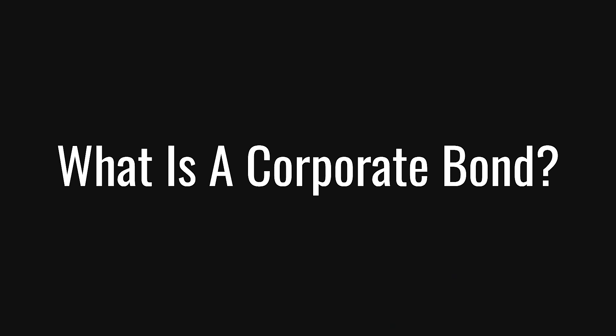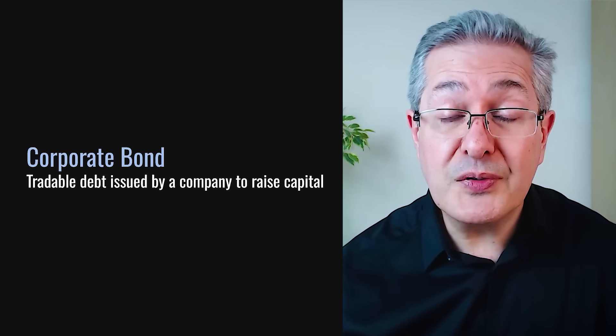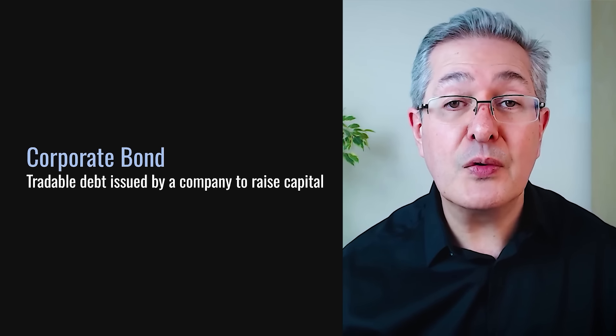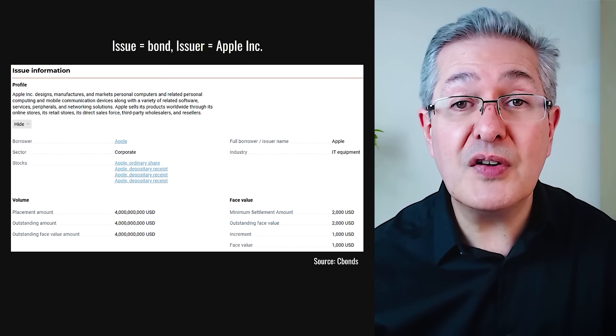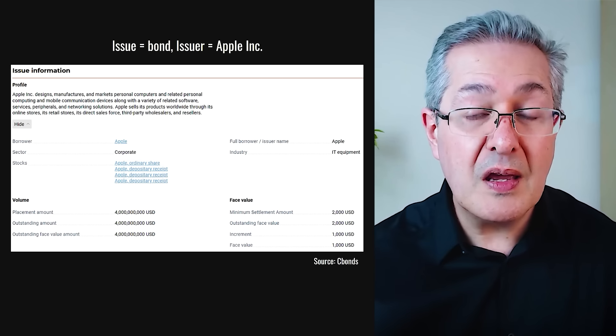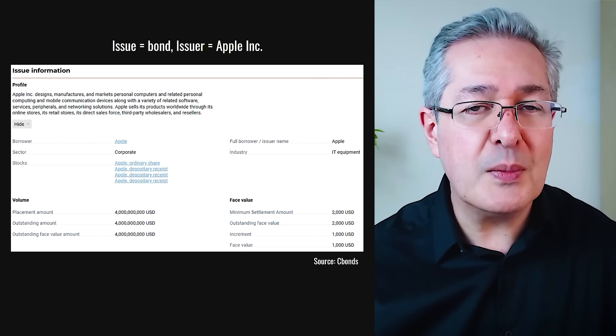Let's begin with the definition of a corporate bond — it is just tradable debt issued by a company. The reason why the company does it is to raise capital, and the reason why investors buy it is to generate return. The issuer is the company which has issued the bond — it can also be a government, but in this case it is a company, which is Apple. The issue refers to the specific bond which has been issued by that company, so an issuer creates an issue which is the bond.